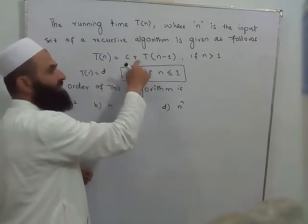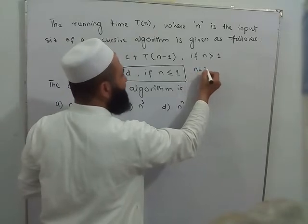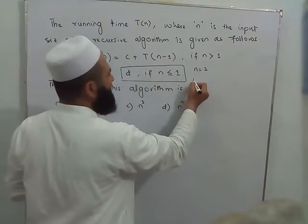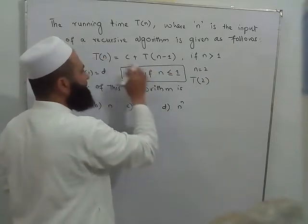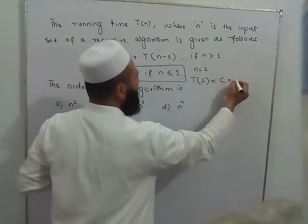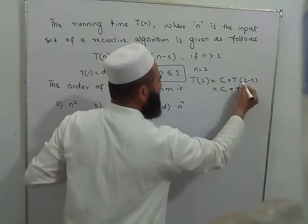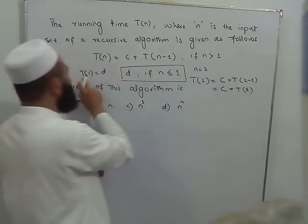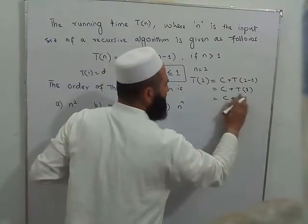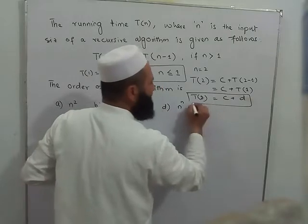So this is a recurrence relation, so we can derive this value. For n equal to 2, T of 2 is equal to c plus T of 2 minus 1, which is c plus T of 1. T of 1 is already given, that is d. So we can see T of 2 equals c plus d.